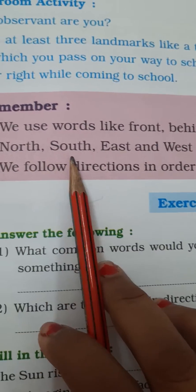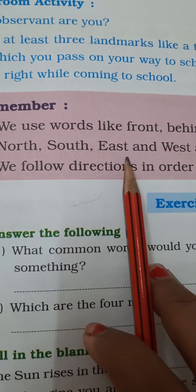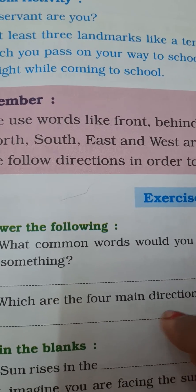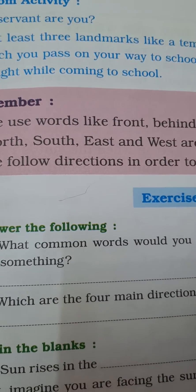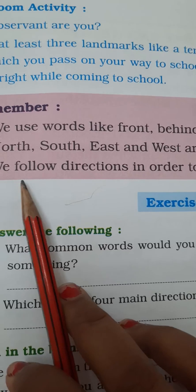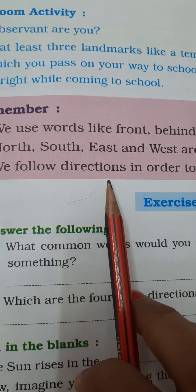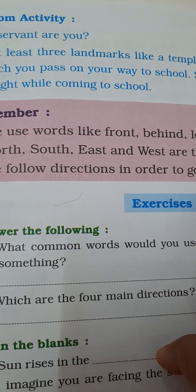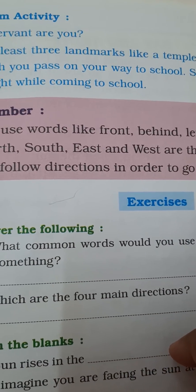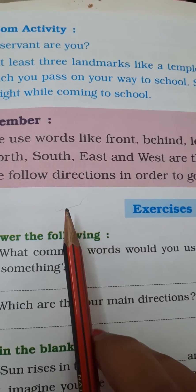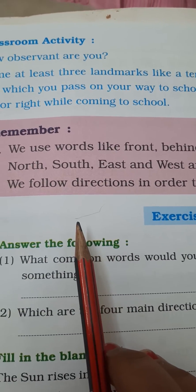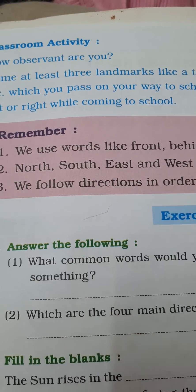North, south, east and west are the four main directions. We follow directions in order to go to a place. I hope you like this video, kids. Like, share and subscribe. Thank you.